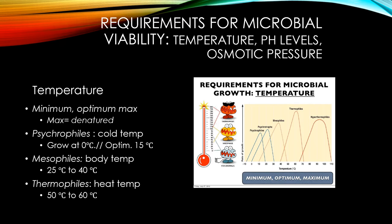Something interesting about psychrophils: if you have something in the fridge that's been in there for a while and you pull it out and see microbial growth, it's typically these psychrophils. Scientists say that 65 to 75 percent of the spoilage of raw milk products is from the species called Pseudomonas.